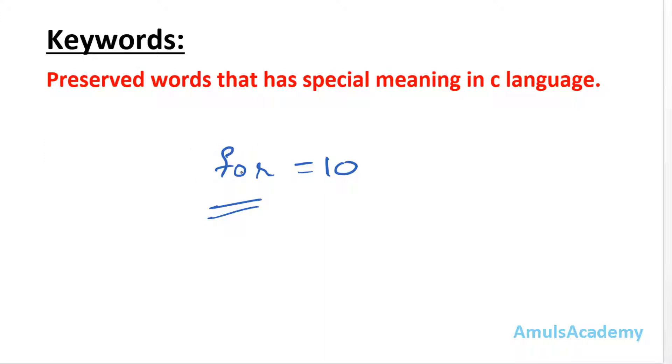But this is the keyword which has predefined meaning and we can't change the meaning of this word but here you are trying to change the meaning of this word. So because of this you will get error, that's why we can't use keywords as the variable name.